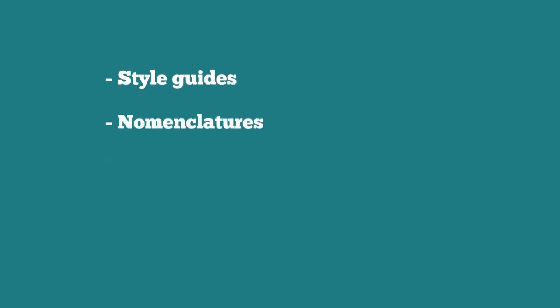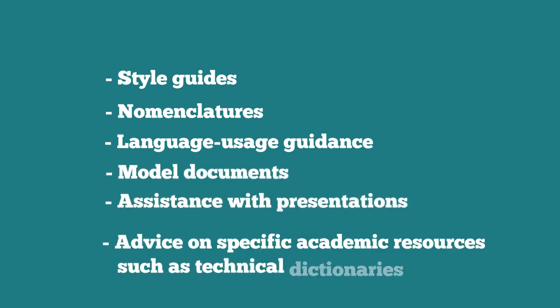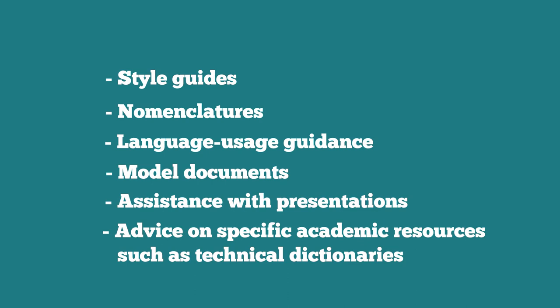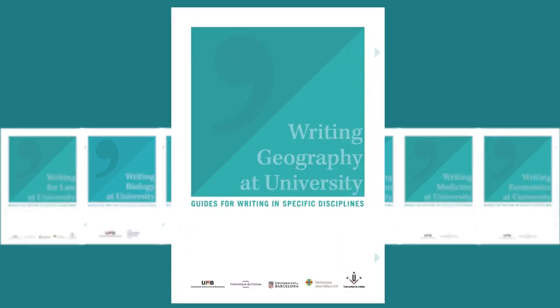Language services usually provide support for the translation and correction of texts. However, for people who need to gain a fuller control of their own language production, they also provide the following: style guides, nomenclatures, language usage guidance, model documents, assistance with presentations, and advice on specific academic resources such as technical dictionaries. Additionally, university language services create tailor-made language materials and produce other products that generally aim to improve users' ability in specialist language. Of particular relevance here are dedicated resources such as the Inter-University Guides to Writing in Specific Disciplines, which offer clear and direct help for writing effectively in these ambits.